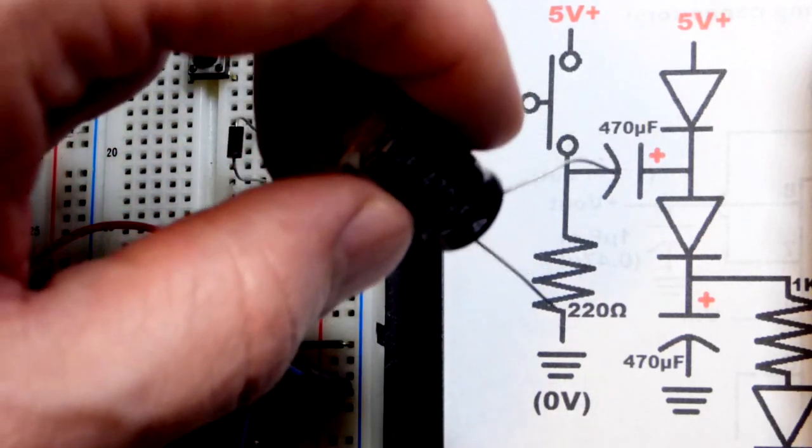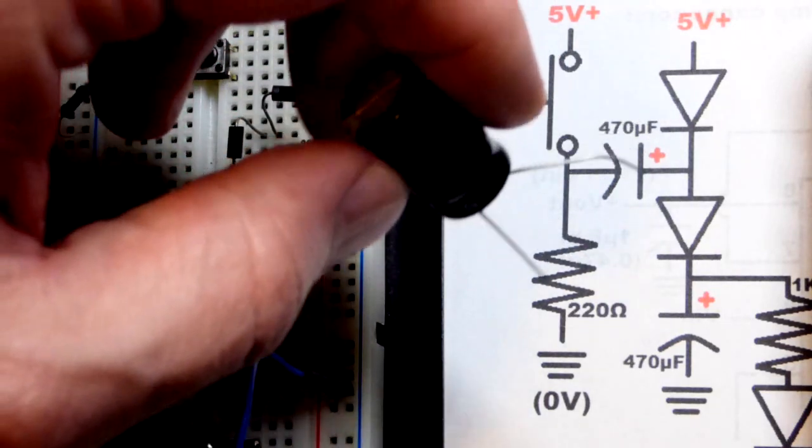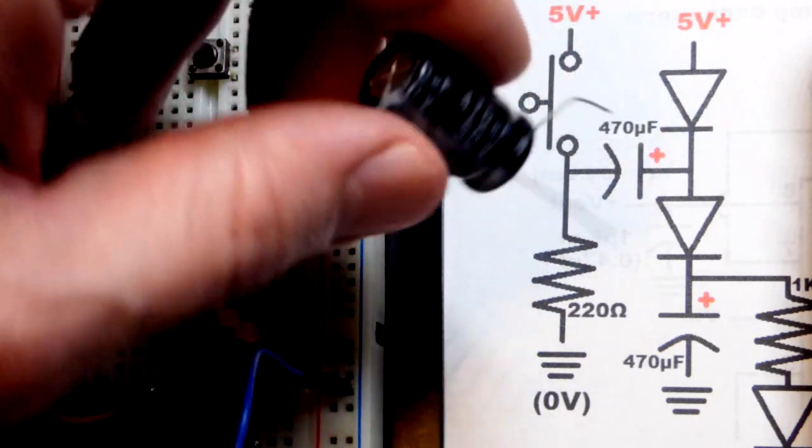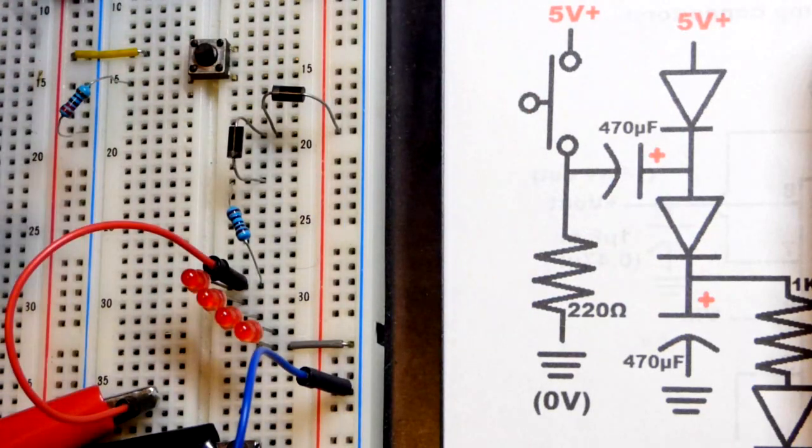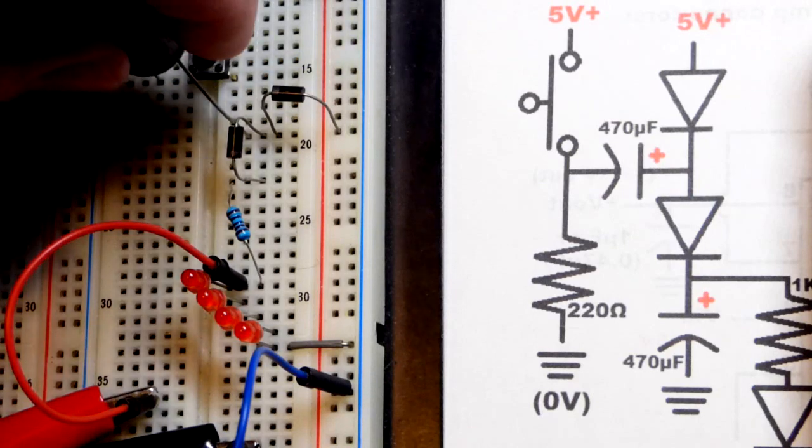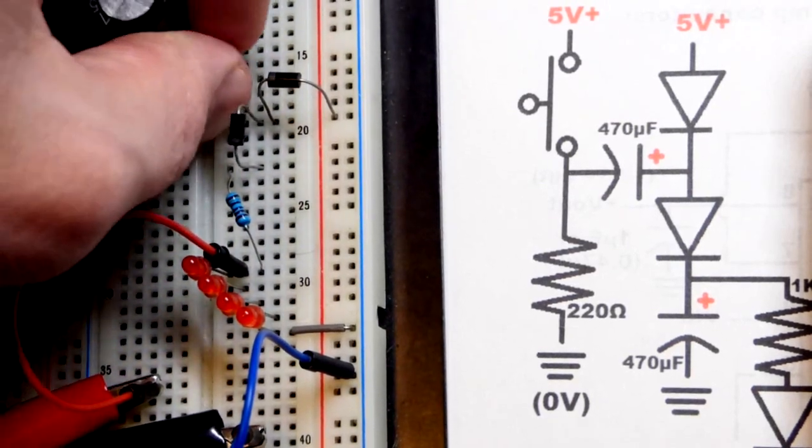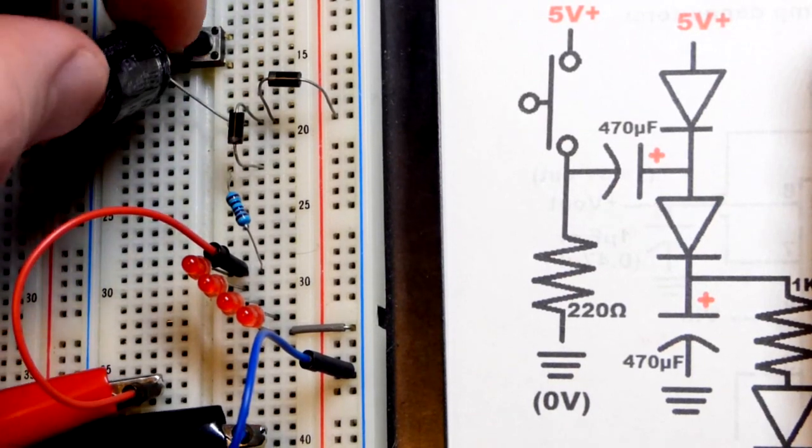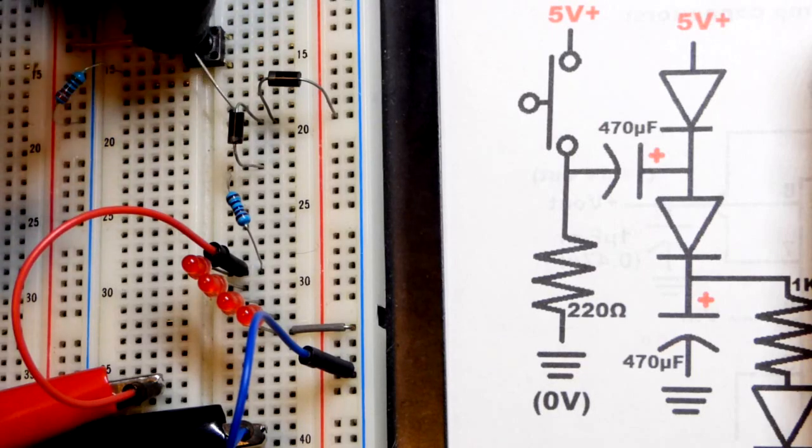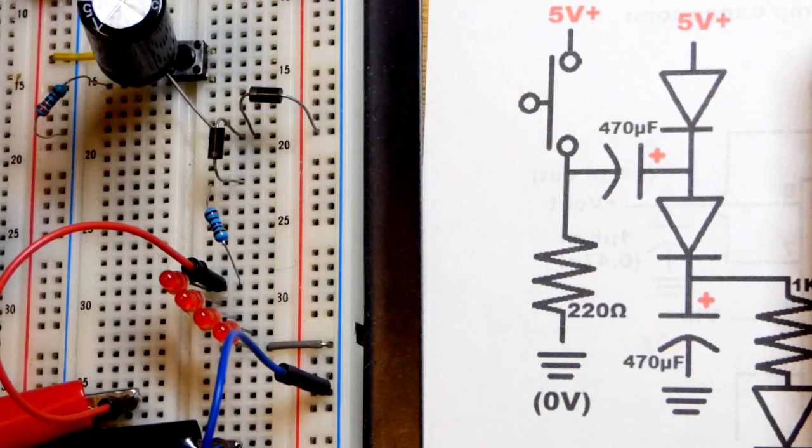especially are not polarized, so you might see two straight lines if they're not polarized. This one's definitely polarized and I put a plus sign there to show the positive side, but if that's not there the curved side is the negative side. We're going to go to where the two diodes come together right there, pretty straightforward. And then this side is coming to the side of the switch, the bottom side that's connected to the resistor.